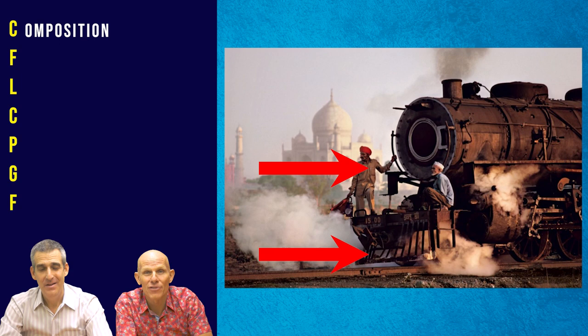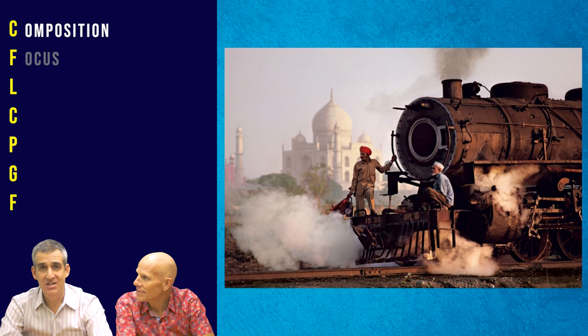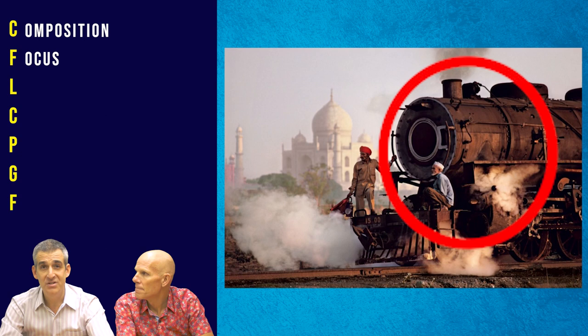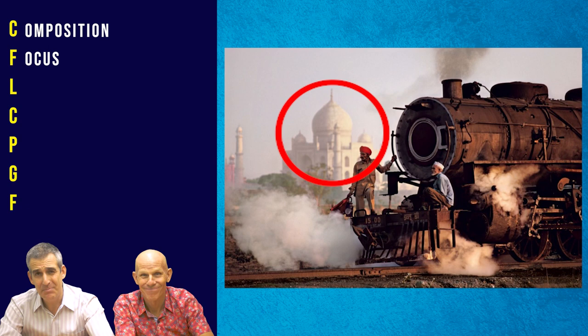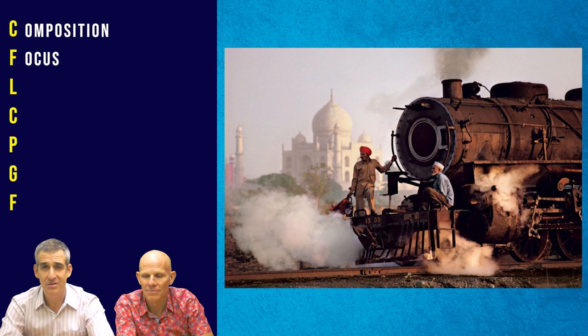The F stands for focus — you want to think about where the focal point is and how focus is being used in the image. In this particular image, we can see in the foreground we have this steam engine and in the background we see the Taj Mahal — a very interesting use of depth of field. Depth of field is when a photographer plays with the f-stop and intentionally blurs what's in the background to keep the foreground in focus.